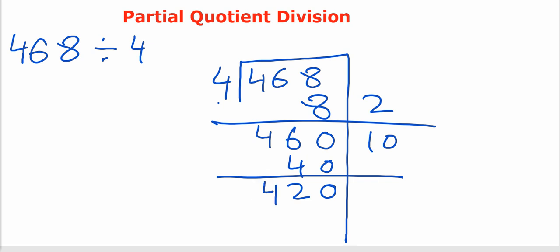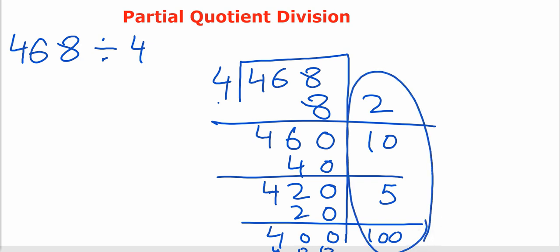Right? Then what if I say 4, 5 times is 20. Then what is left with us? 4. And what if I say that 4, 100 times is 400. So again, if I will add these numbers, I will again have 117. Let's add 100 plus 10 is 110, 115, and 117. Again, our answer is 117.